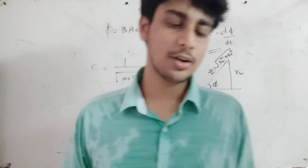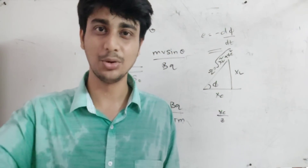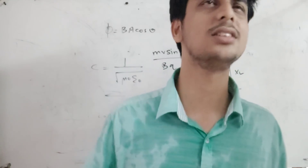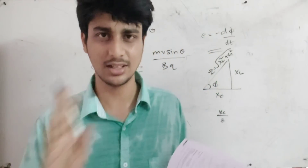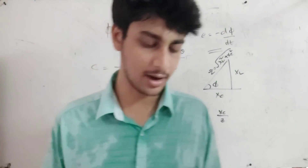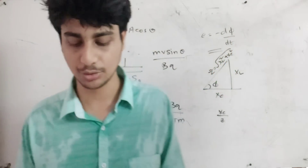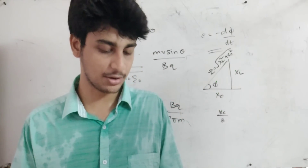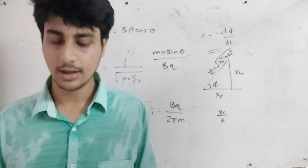Let's see the numericals. In ray optics and optical instruments, the refractive index: mu i sin i is equal to mu r sin r. Apparent depth: mu equals real depth by apparent depth concept. Snell's law: sin i by sin r is equal to mu.